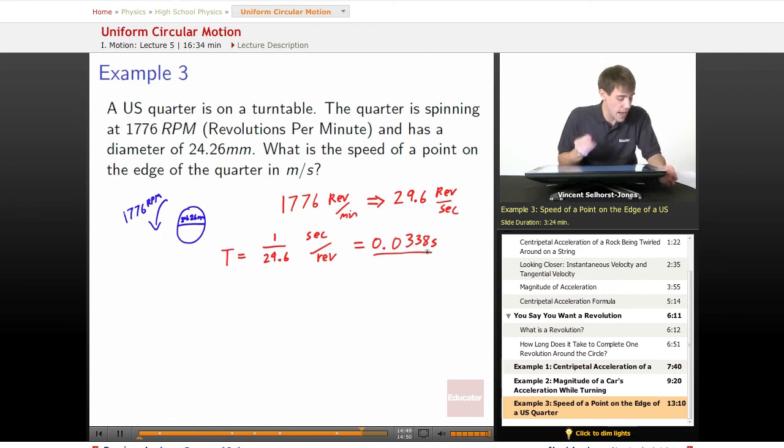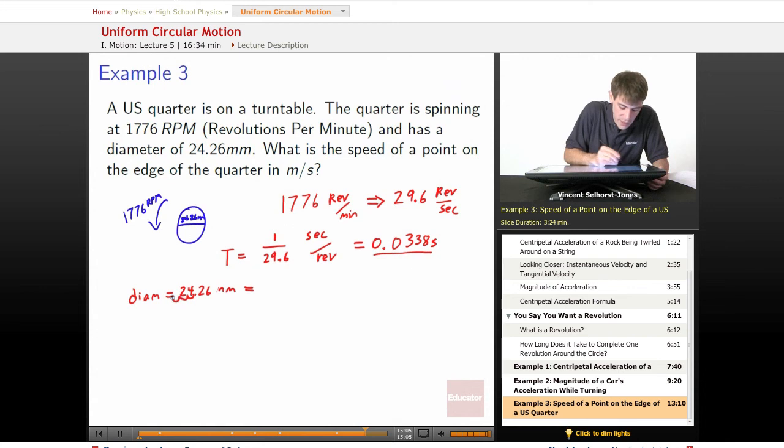What's the diameter if we want that in SI units? If your diameter starts off at 24.26 millimeters, then we move over once to centimeters, then decameters, and then finally to meters. So we get 0.02426 meters.